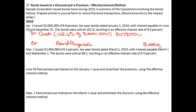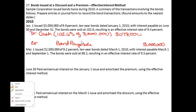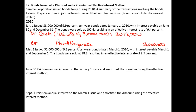Notice I sold this bond above 100%, so because of that I need another credit called premium on bonds payable for $78,000 — the difference, the plug.